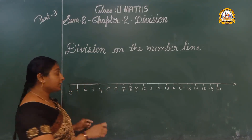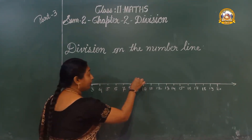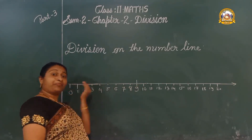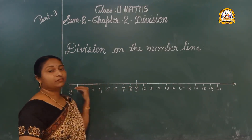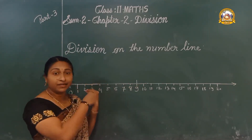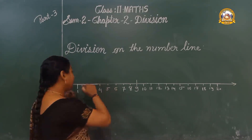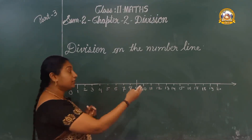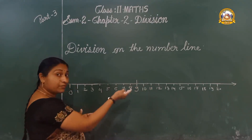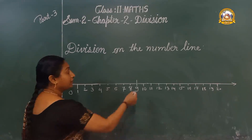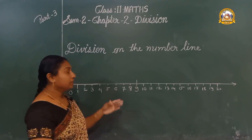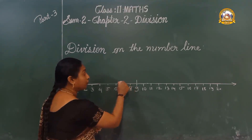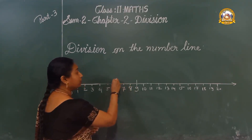9 minus 3. Start from 9. Subtraction means we go right to left — backwards. If it is addition, we go left to right, forward. But subtraction means backward. Start from 9, let us subtract 3: count 1, 2, 3 steps — we reach 6. That is the first jump.